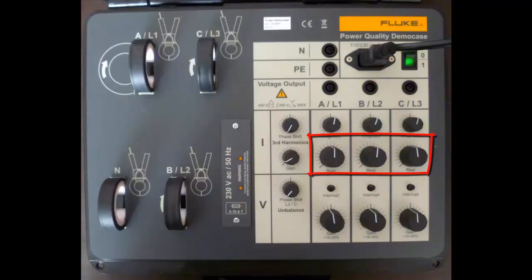The second set of controls for the current. Here we can adjust the current magnitude, that is how many amps are displayed on the instrument. Again when you first start, put the knobs so that the white line is facing upwards. This will give you about 50% of the available current.